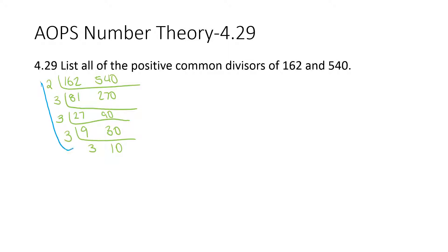So the common prime factors they share are 2, 3, 3, and 3. The total number of positive common divisors would be the different combinations of these numbers: 1, 2, 3, 6 (because 2 times 3 is 6), 9 (because 3 times 3 is 9), 18 (because 2 times 3 times 3 is 18), 27 (because 3 times 3 times 3 is 27), and 54 (which is all of them together). So these are all the common divisors of 162 and 540.